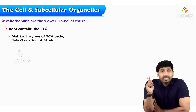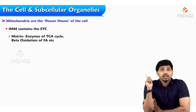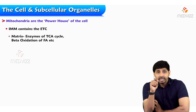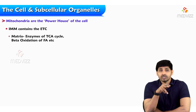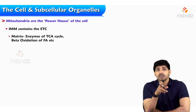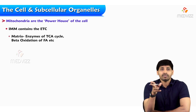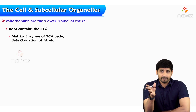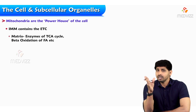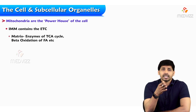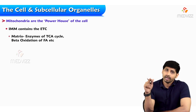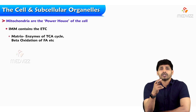The outer membrane is harder and more rigid compared to the inner membrane. The inner mitochondrial membrane folds into cristae, and mitochondria has two compartments: the inner membrane space and the matrix. The inner mitochondrial membrane contains the electron transport chain, and the matrix contains enzymes of the TCA cycle and beta oxidation of fatty acids.